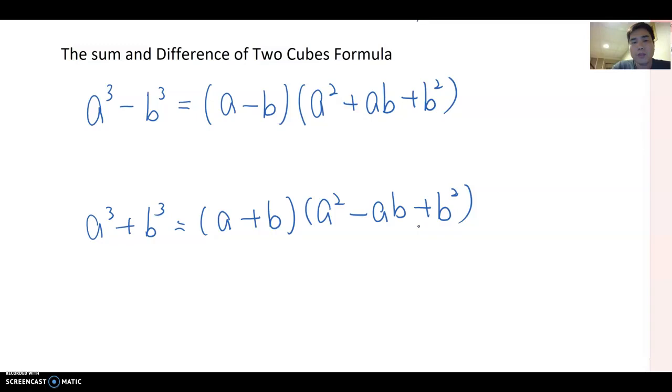So when you look at these two formulas, you may notice one fact, which is if the sign is minus, then the first factor becomes single a minus single b here. And then the second factor becomes a square plus ab plus b square. But this is plus here. Then the first factor has a plus b, and then second part starts from minus and plus. So that is the key point here.